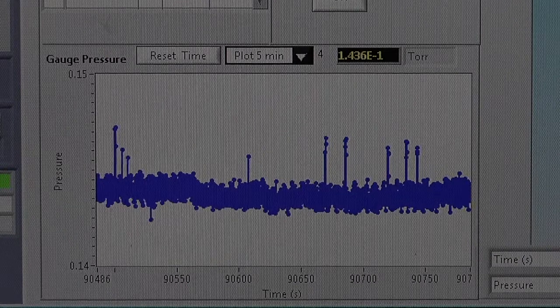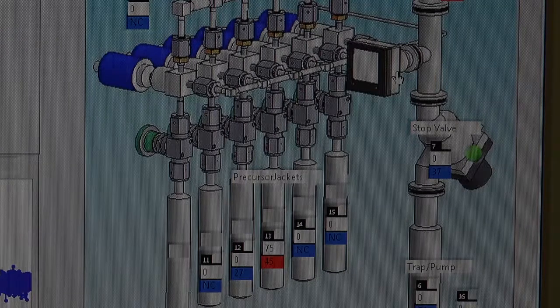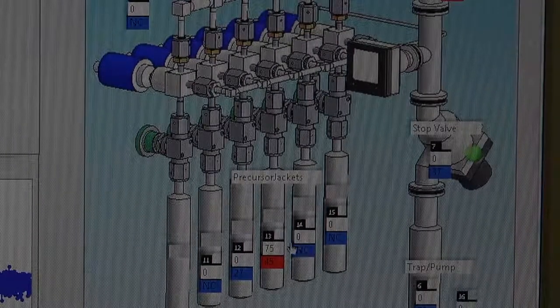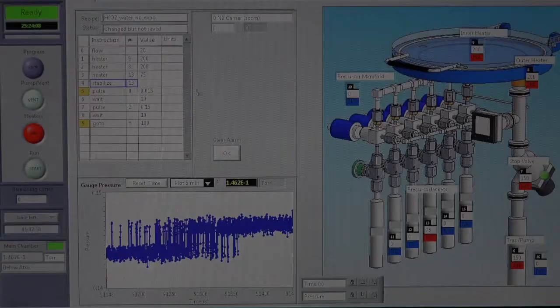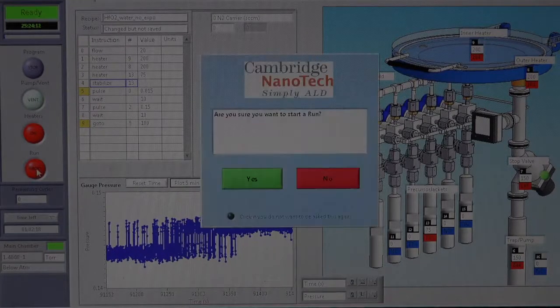The pressure of the chamber is measured by a vacuum gauge shown here. Control of the valves for the precursors and purge gas canisters are here. Once we have the conditions set up, we simply start the process by clicking Run.